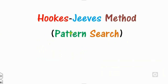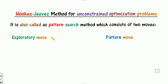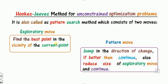Let us start with the Hooke-Jeeves method, also called the pattern search. We call it pattern search because it follows some pattern and tries to search for a new point. This method is basically divided into two moves: the first is called the exploratory move, and the second is called the pattern move. The task of the exploratory move is to find the best point in the neighborhood of the current point. Once the best new point is found, we jump in the direction of change. If it is better we continue; otherwise we reduce the size of the exploratory move.